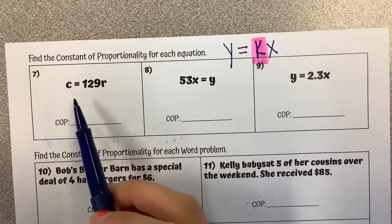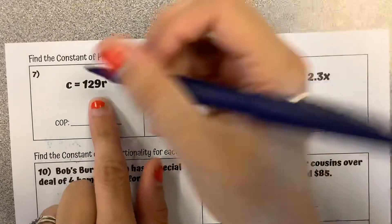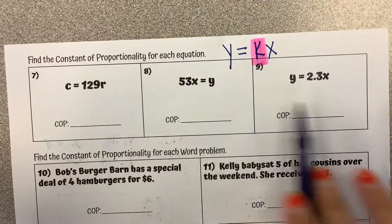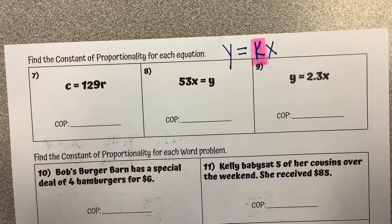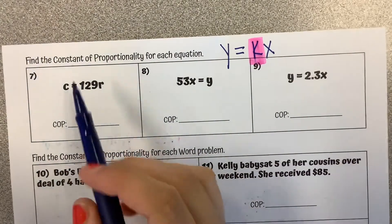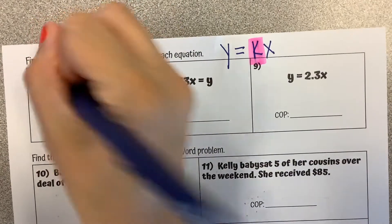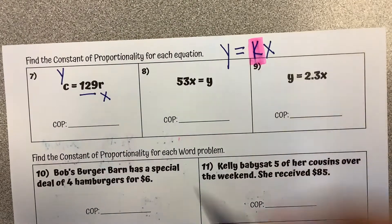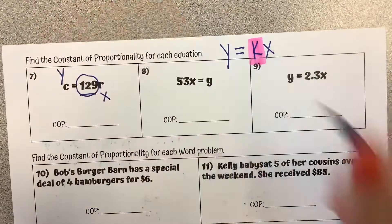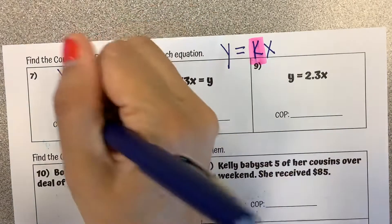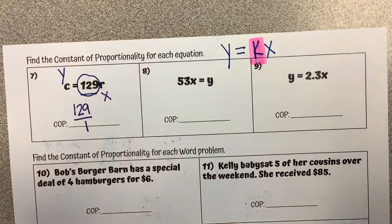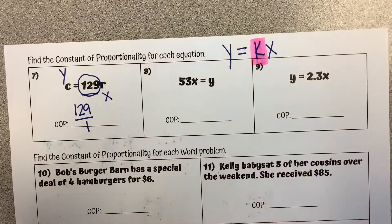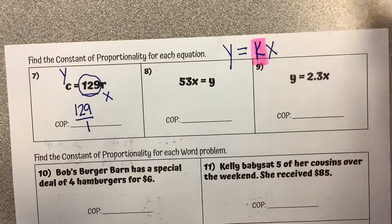So in this scenario, the number being multiplied, it's not always going to be y and x. That's kind of the common place. But sometimes we just have word problems where we use different variables to represent y and x. So in this case the c is representing our y and then 129 is being multiplied by r which is representing our x. So that constant of proportionality is 129. I'm going to write that as a fraction 129 over 1 to show the relationship 129 for the y value to every 1 for the x value.